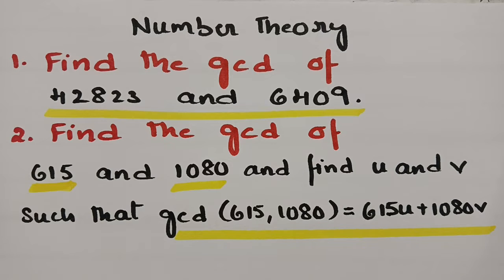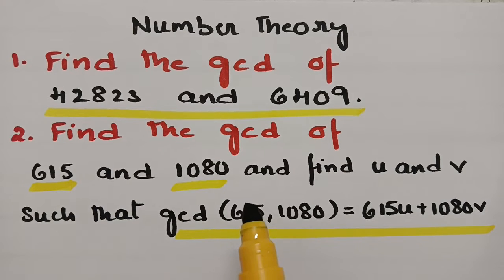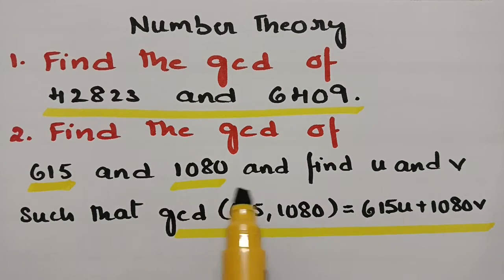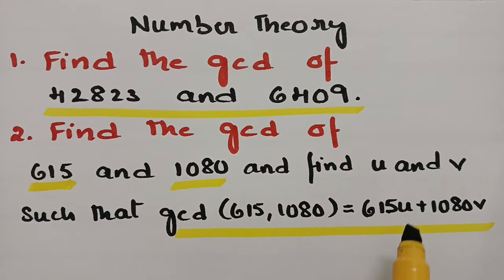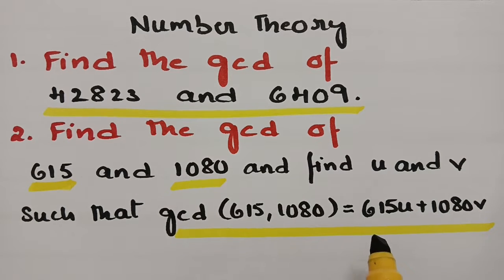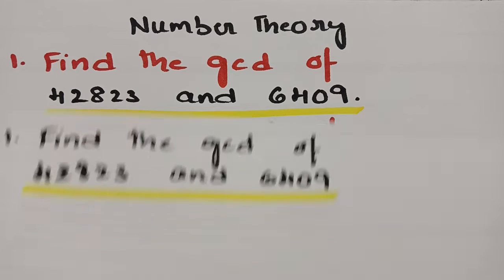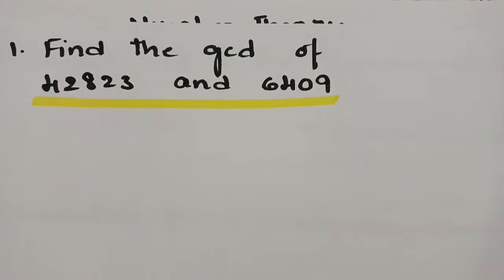This is related to MFCS, DMS, and DMGD. Now two questions are flashing on the screen. The first one is to find the GCD between two numbers. The next is to find the GCD between two numbers and find the relation between U and V in the particular equation. The first question is to find the GCD of these two numbers.